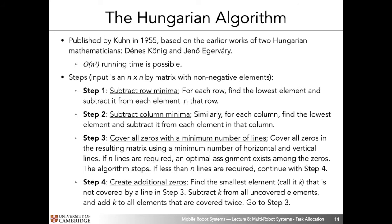There is a better way: the Hungarian algorithm, or Hungarian method. Originally published by Kuhn in 1955, based on earlier works by Hungarian mathematicians Dennis Koenig and Jeno Egerváry — the origin of the algorithm's name. This paper showed it was possible to solve the assignment problem in O(n³). There are four key steps: first subtract row minima, second subtract column minima, third cover all zeros with a minimum number of lines, and if that number equals the number of assignments needed you're done; otherwise proceed to step four to create additional zeros and reiterate.